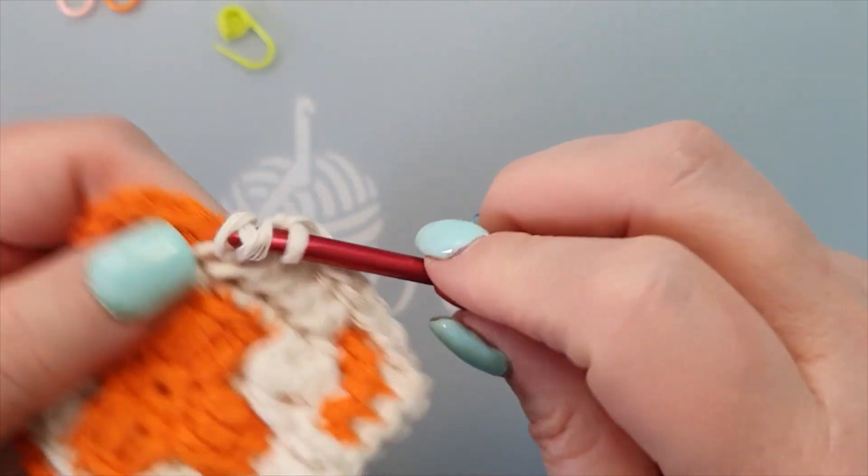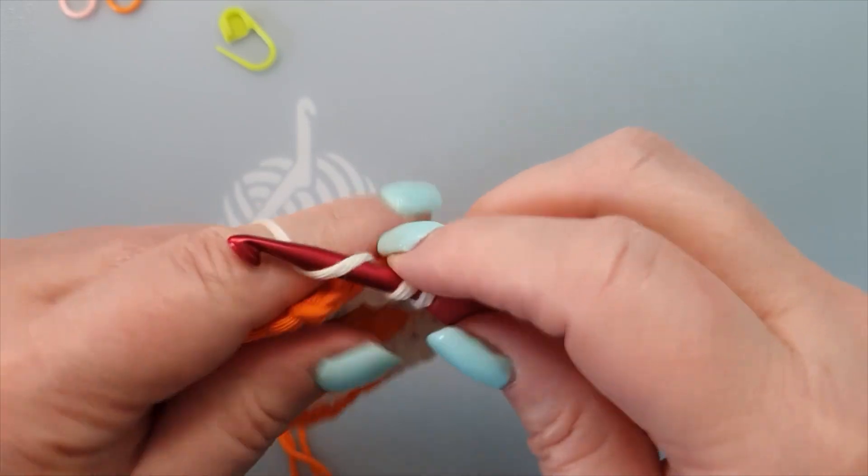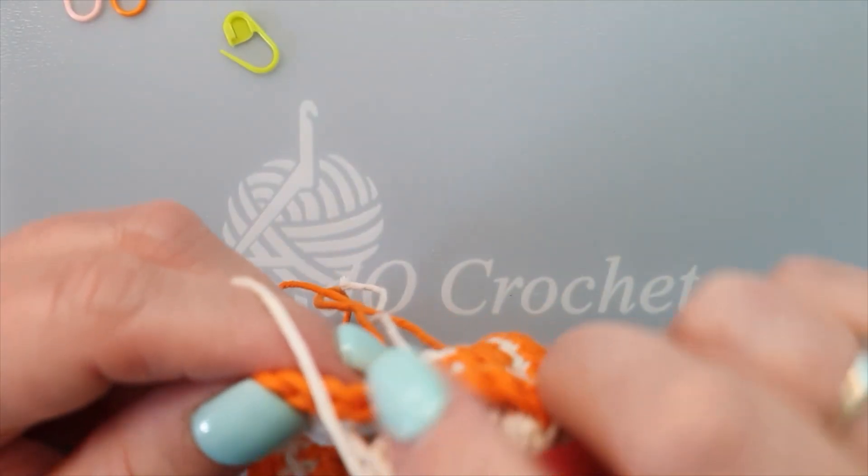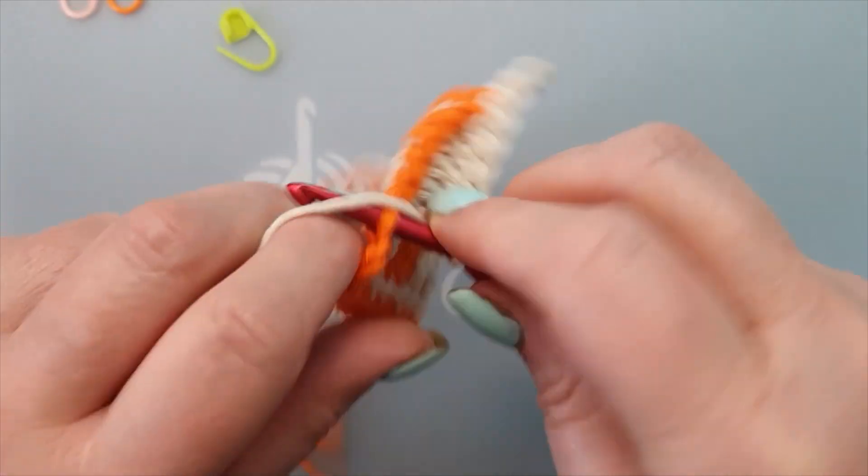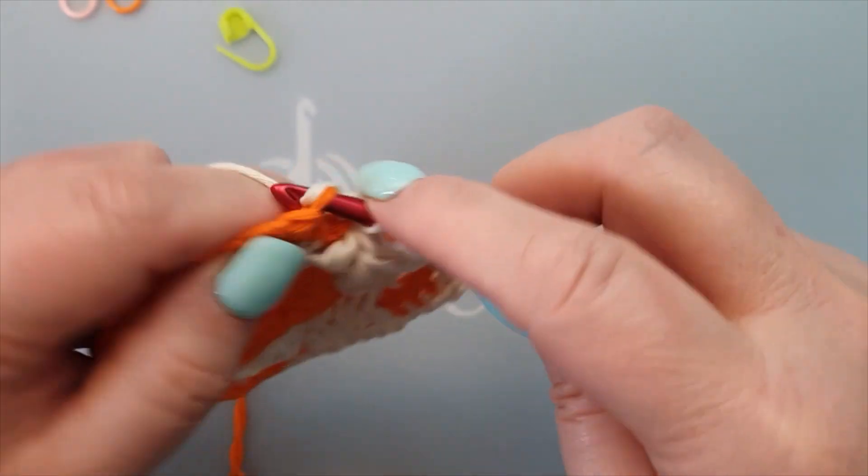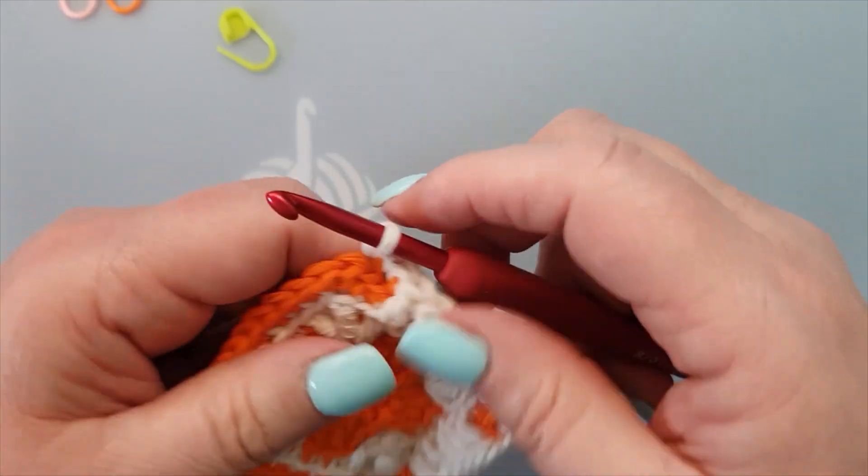Two singles, check if you need check one, two, three, four, five skipped so this is the one. Back loop one and two and then the third repeat a corner.